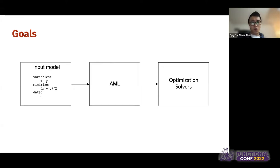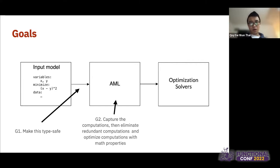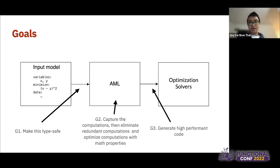So what are our goals? First, we're going to make this system type-safe — translating the model to the algebraic modeling language safely. Second, in the algebraic modeling language itself, we want to capture all computations, eliminate redundancy, and optimize computations using math properties. Third, we want to generate high-performance code so we can pass it to optimization solvers and have it run efficiently.